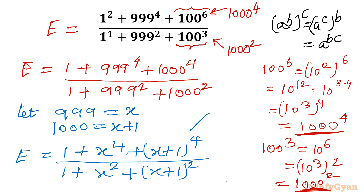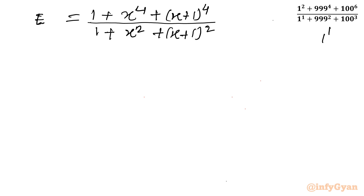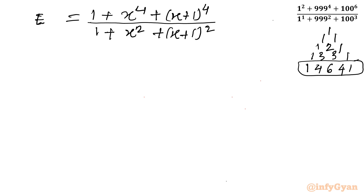There are two ways to expand (x+1)^4 — either multiply (x+1)^2 × (x+1)^2, or use Pascal's triangle. Let me use Pascal's triangle: coefficients for power 4 are 1, 4, 6, 4, 1. So (x+1)^4 = x^4 + 4x^3 + 6x^2 + 4x + 1.